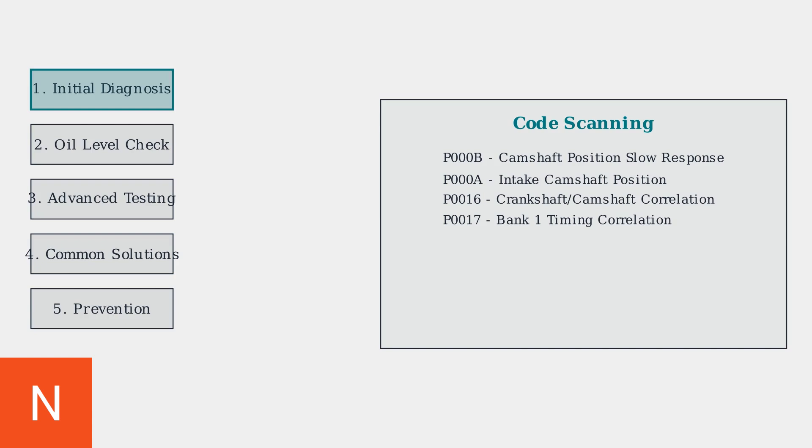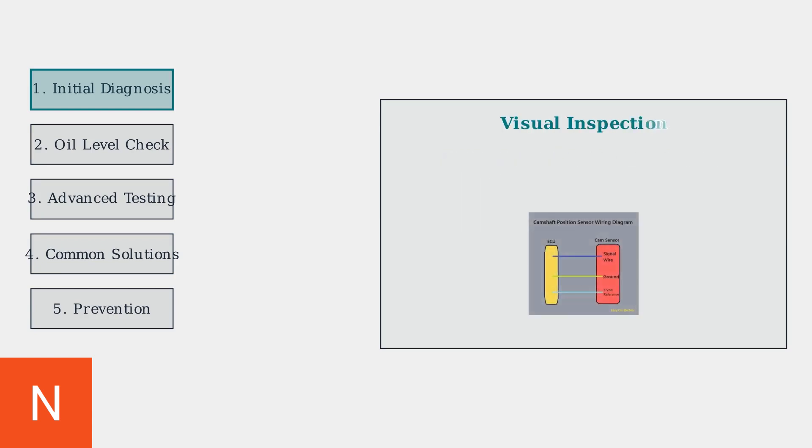Next, perform a visual inspection of the wiring harness and connectors. Look for damaged, corroded, or loose connections that could cause signal issues.